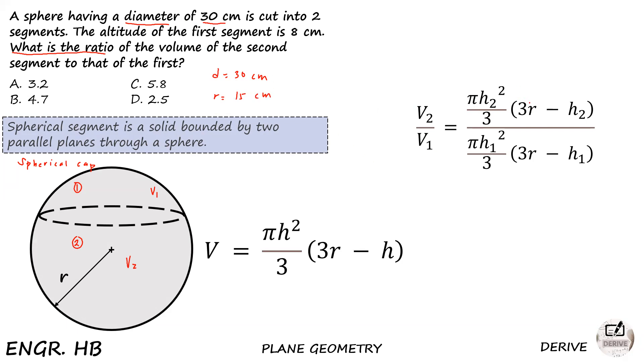So in this ratio, we're not going to have a problem finding the radius because it's common to both segments. If you have 15 here, you have 15 here too. This is 15 and this is 15. So our problem now is this small h.